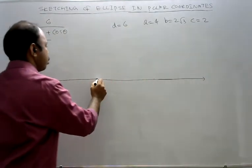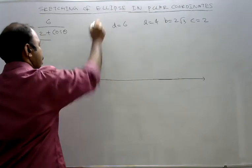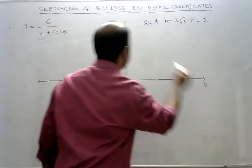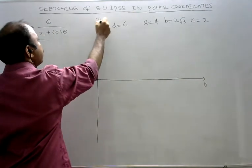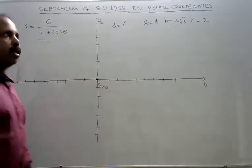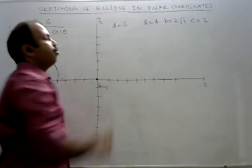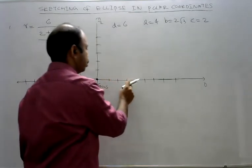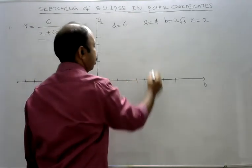Then the perpendicular axis. This is 0, π by 2. Now focus is at the pole. Directrix right of pole, 6 units right of pole. That means 1, 2, 3, 4, 5, 6. This is the directrix.